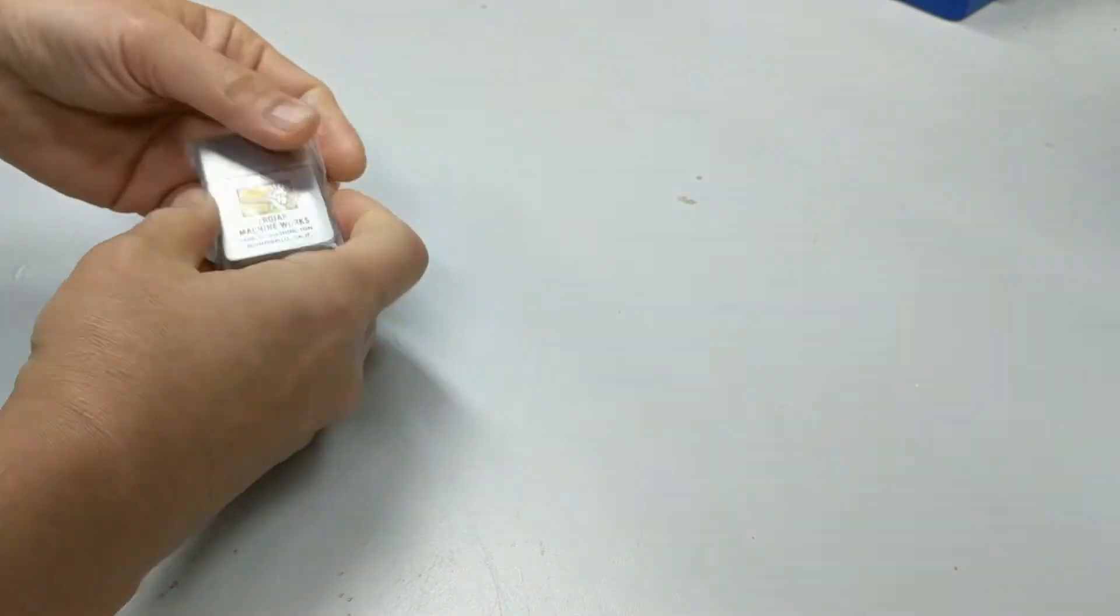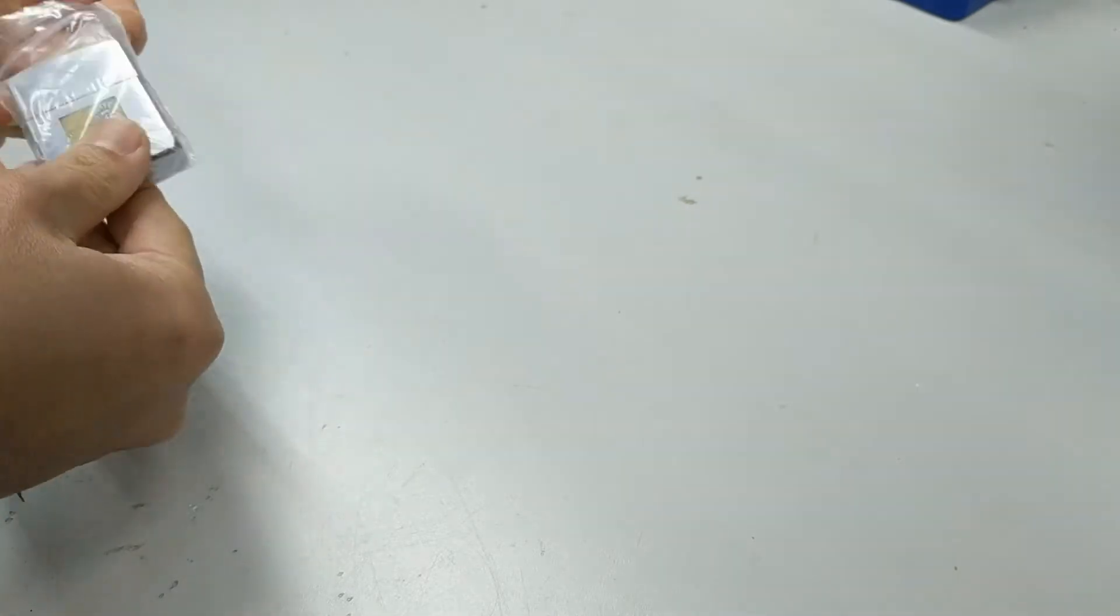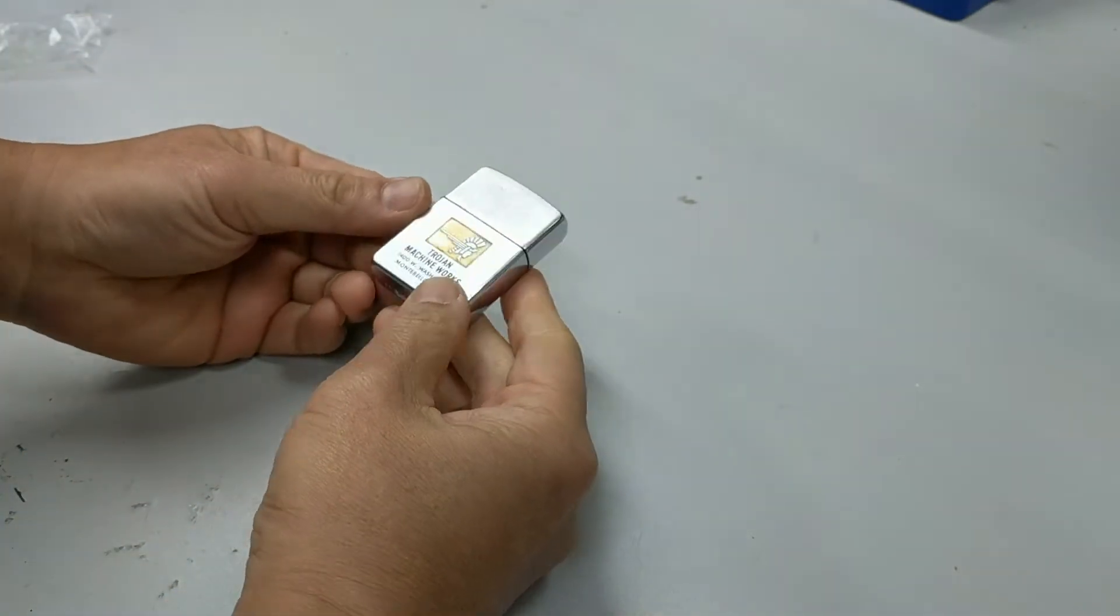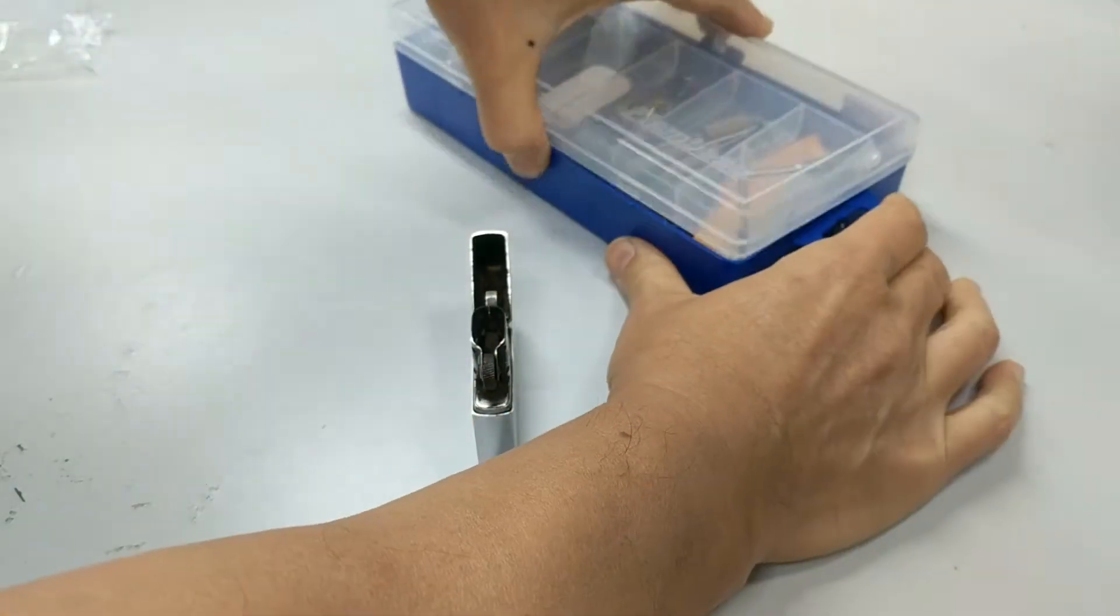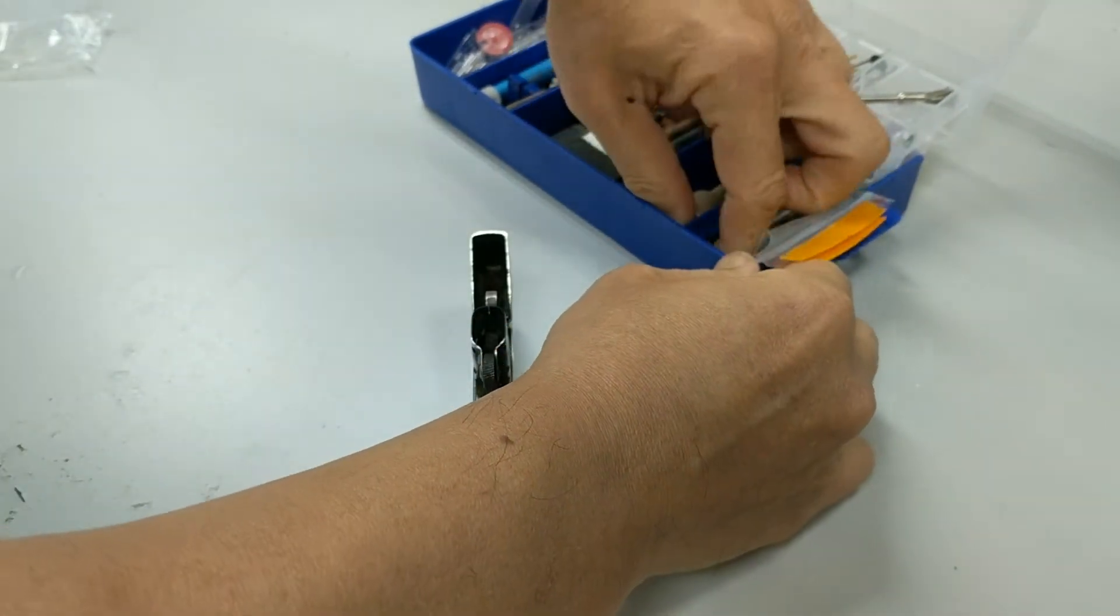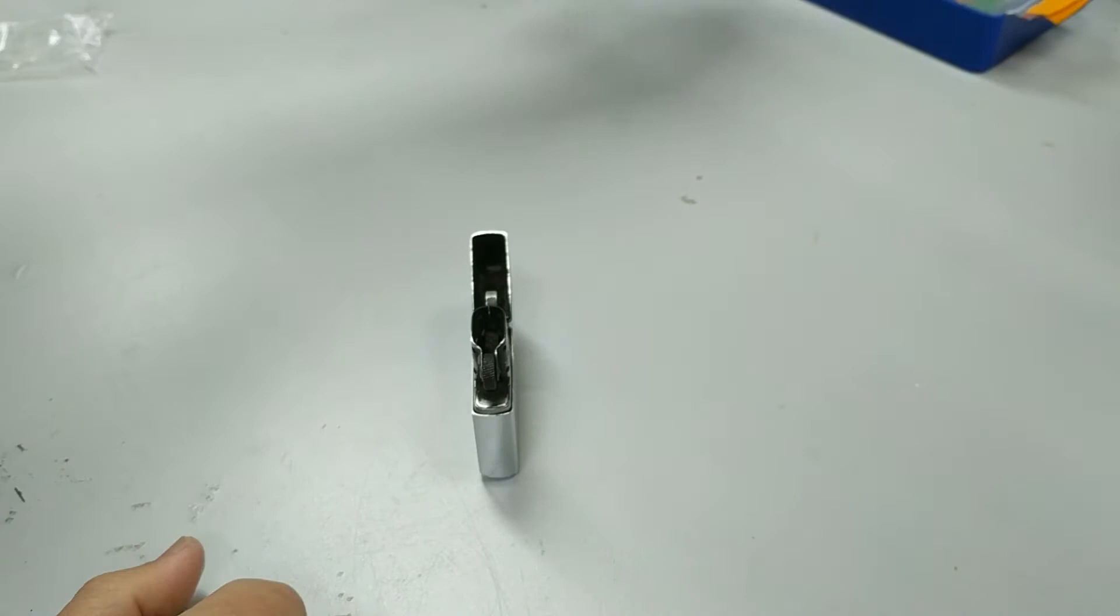The lighter itself was one of the ones I previously lost in an auction, so I was actually pleasantly surprised for an opportunity to restore it. The lighter is for Trojan Machine Works located in Montebello California. Montebello actually means pretty mountain in Spanish.